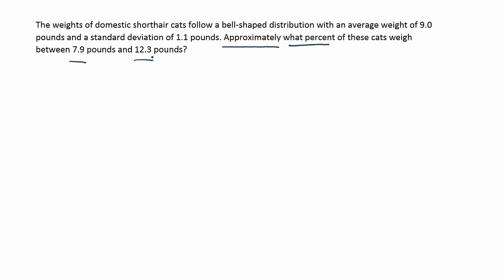But before we jump to use empirical rule, we have to be very cautious and make sure we have justification that the data set follows a bell-shaped distribution. And sure enough, it states that. It says that the data follows a bell-shaped distribution. So this is empirical rule in the most classic sense. So let's go ahead and try to solve this problem.